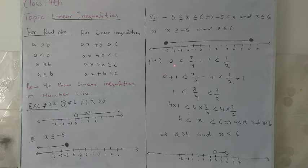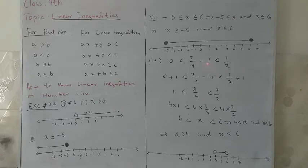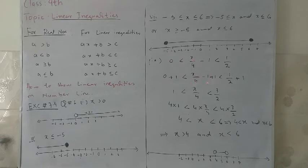Now another part: to show 0 is less than x by 4 minus 1 which is less than 1 by 2 on a number line, first we will solve it for x. To remove minus 1, we will use the additive property and add 1 to both sides. That gives 0 plus 1 less than x by 4 minus 1 plus 1 less than 1 by 2 plus 1. Here 0 plus 1 becomes 1, and x by 4 minus 1 plus 1 cancels out, giving 1 less than x by 4 less than 3 by 2.